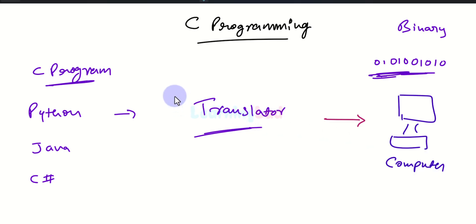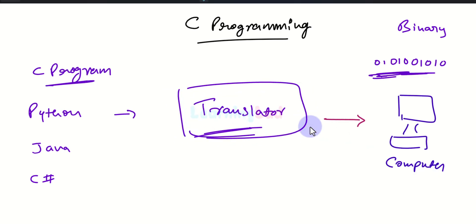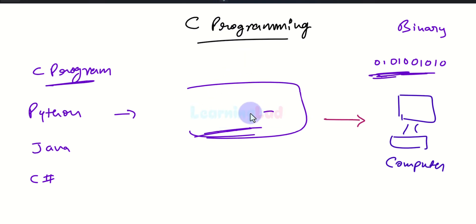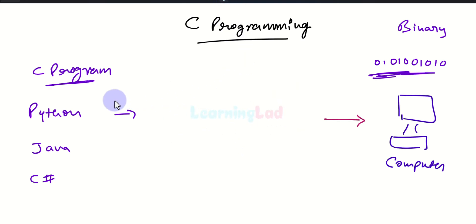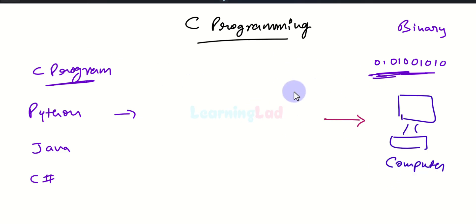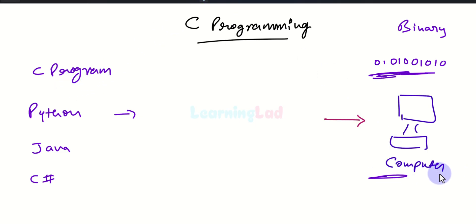Now what is this translator? This translator is another program which will take the source code in a particular programming language and convert it to machine code. In this case it will take the source code written in C programming language and convert it to machine code.